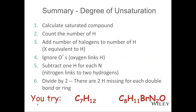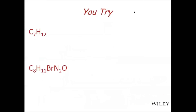To summarize: first, calculate the saturated compound. Separately, determine the effective number of hydrogens by adding all hydrogens plus all halogens, ignoring oxygen, and subtracting one hydrogen for each nitrogen. Then subtract that value from the saturated number of hydrogens and divide by 2. For the first practice problem, C7H12 — the saturated molecule for C7 would be H16. We take 16, subtract the 12 H's we have, which is 4, divide by 2, and that is 2 degrees of unsaturation.